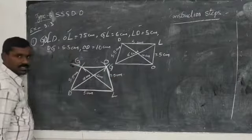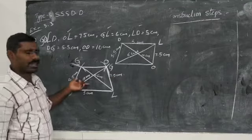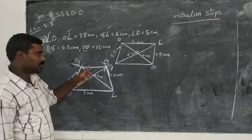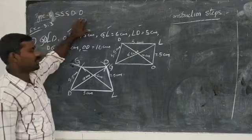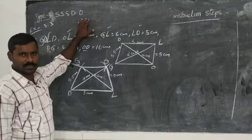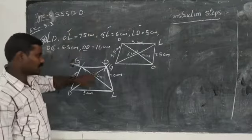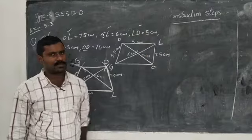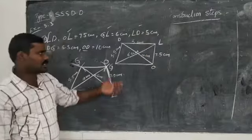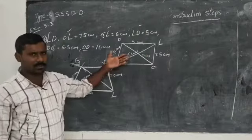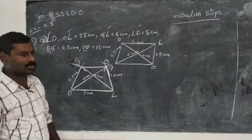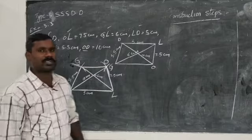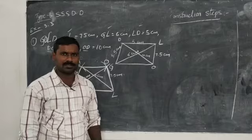This is the required quadrilateral when three sides and two diagonals are given. Write the construction steps for this. You have to complete Exercises 3.2 and 3.3 completely. Thank you.